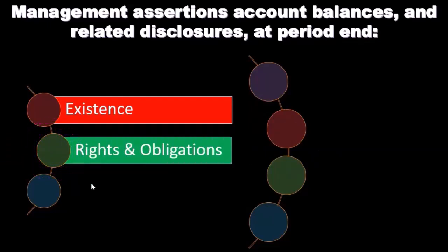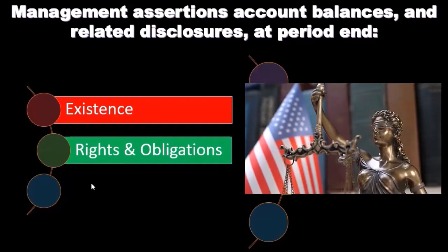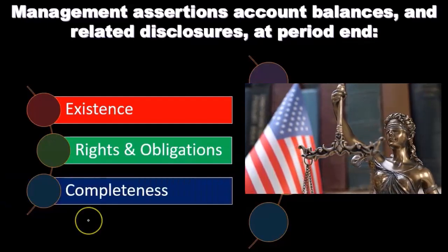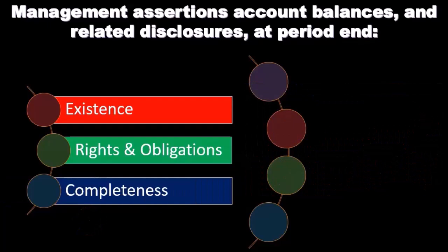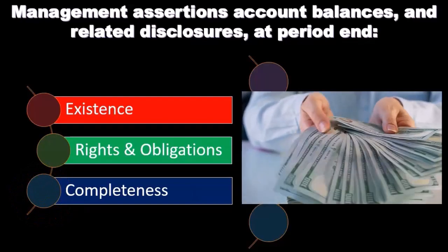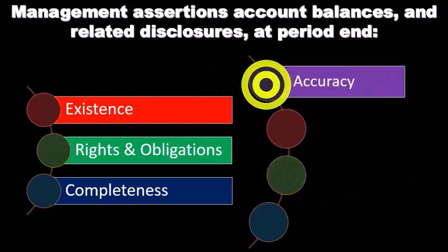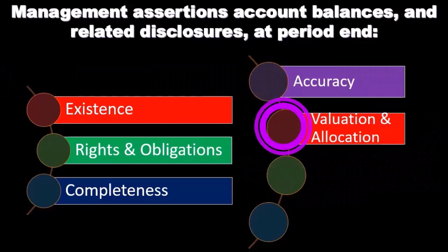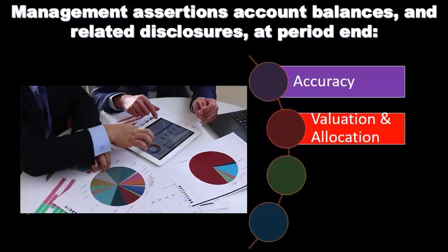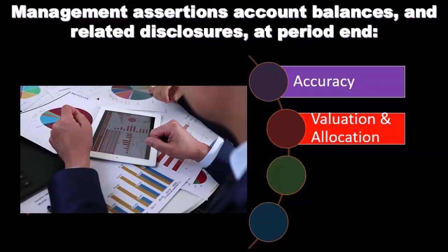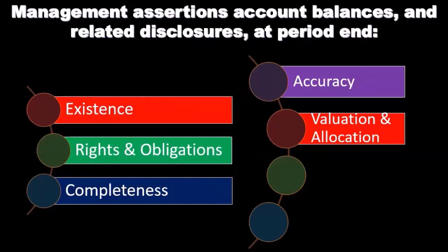Rights and obligations: the entity holds or controls the rights to assets, and liabilities are the obligations of the entity — they actually have the rights and obligations to the assets and liabilities being reported. Completeness: all assets, liabilities, and equity interests that should have been recorded have been recorded, and all related disclosures have been included. Accuracy, valuation, and allocation: assets, liabilities, and equity interests are included at appropriate amounts, and any resulting valuation or allocation adjustments have been appropriately recorded and described.